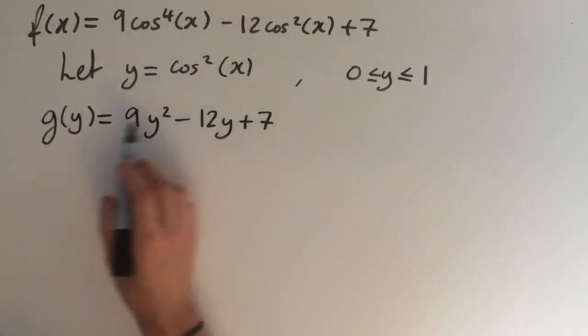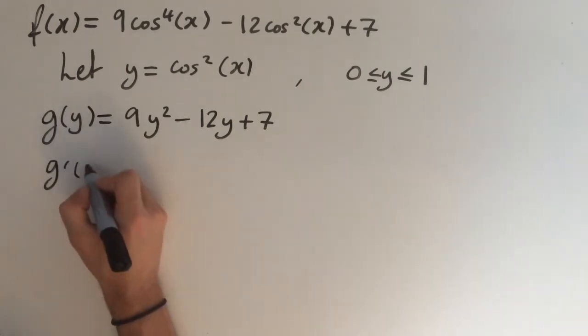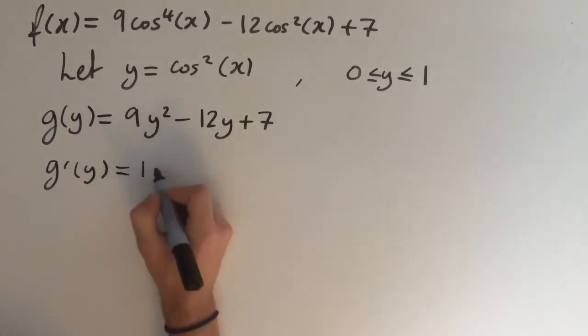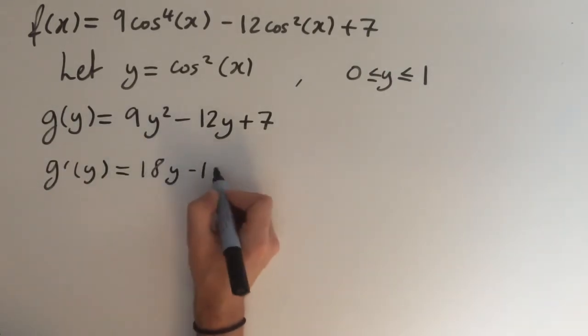And this is a simple quadratic. And we can minimize this by finding its turning point. So let's differentiate. We get g dash of y equals 18 y minus 12.